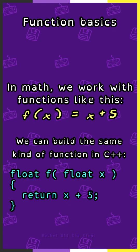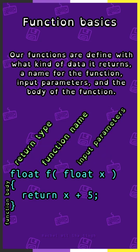In C++: float f, parameter list float x, and within the function body, return x plus 5. First is the return type, then the function name, then within parentheses we list our input parameters as variables with their type and name. Then within the curly braces is the function body, where we write our instructions for what this function does.